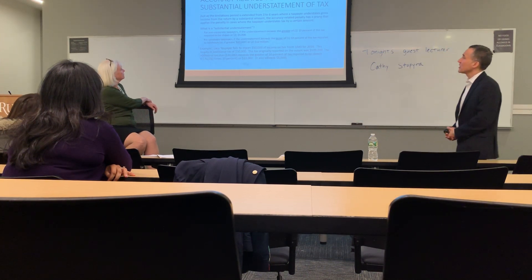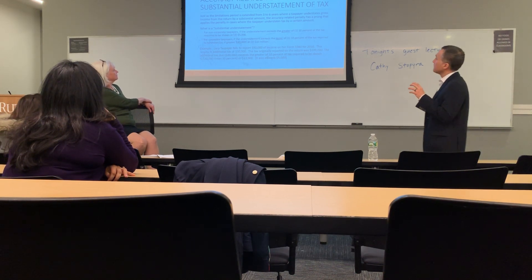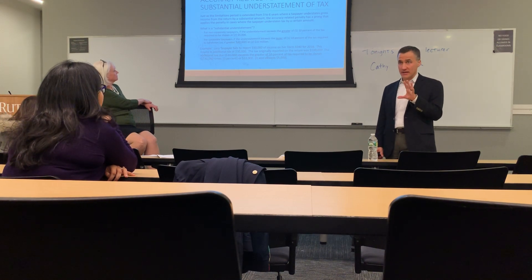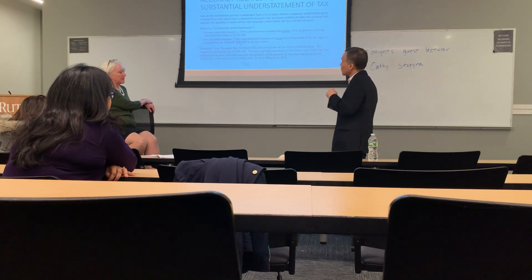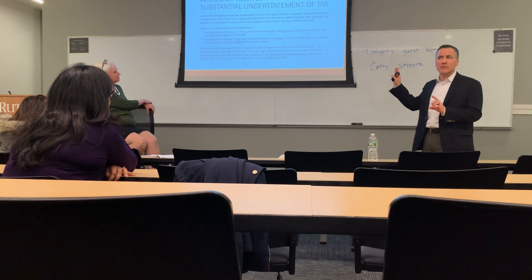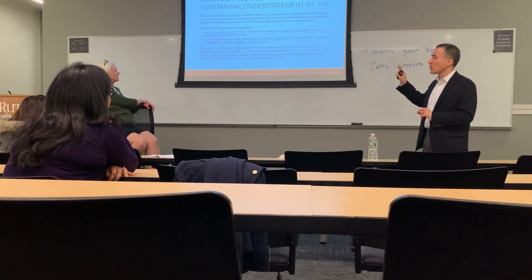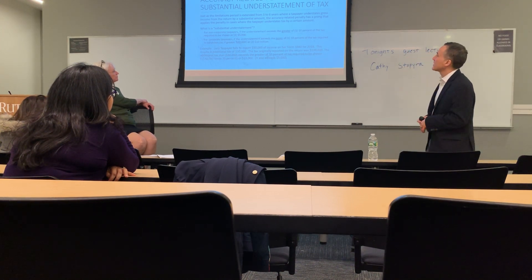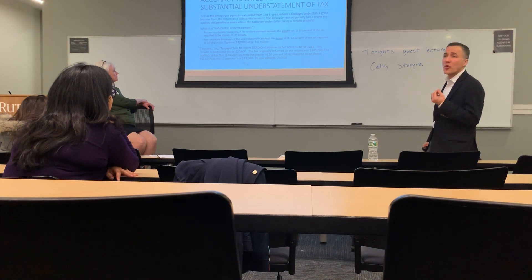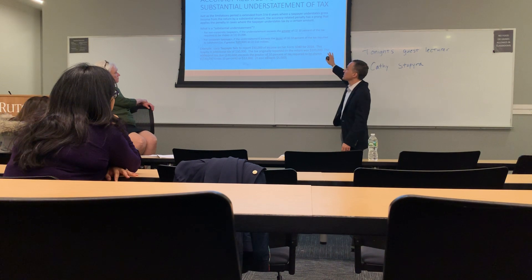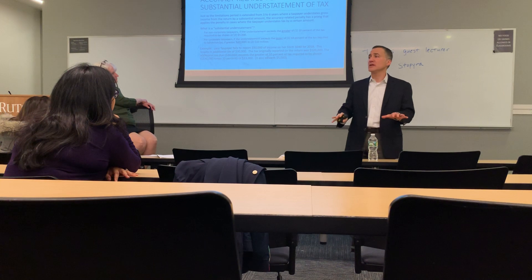The next prong is substantial understatement. This applies when you have an understatement that is large enough — it doesn't matter why yet. For non-corporate taxpayers, it's an understatement exceeding the greater of 10% of the tax required to be shown or $5,000. For corporate taxpayers, it exceeds the lesser of 10% of the tax required to be shown or the greater of $10,000 or $10 million. The mere fact that it's big enough puts you into a 20% penalty.